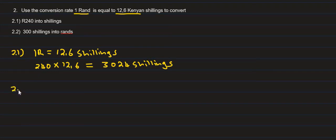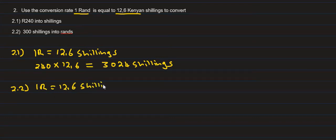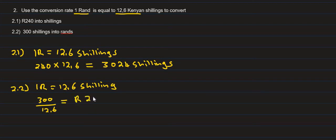Part 2.2: convert 300 Shillings into Rand. Since 1 Rand equals 12.6 Shillings, we divide: 300 divided by 12.6 equals 23.81 Rand. So if you go to Kenya with 300 Shillings, you will have 23.81 Rand.